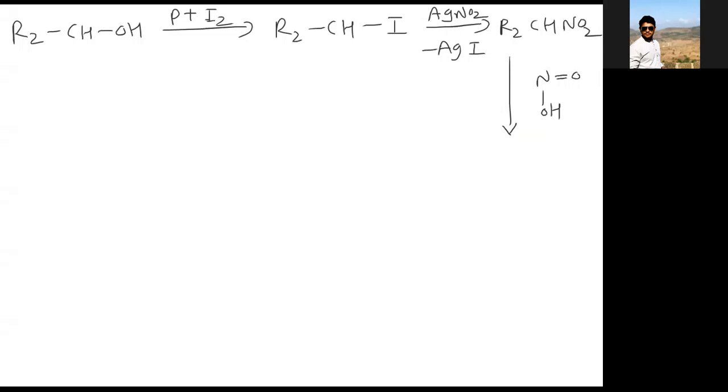Now secondary alcohol: first step phosphorus plus iodine, we'll get R2CH-I. AgNO2, Ag is removed, R2CH-NO2. Addition of HNO2 and